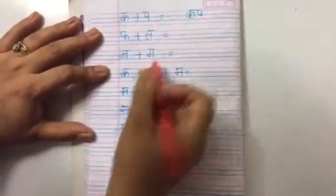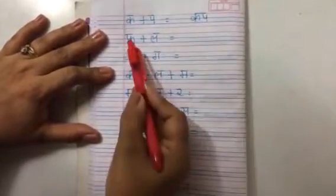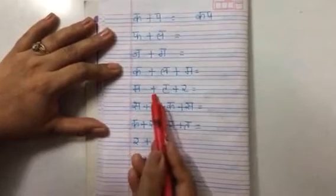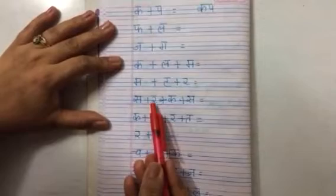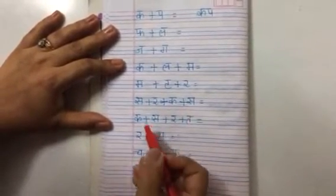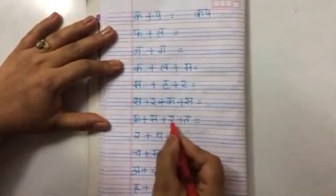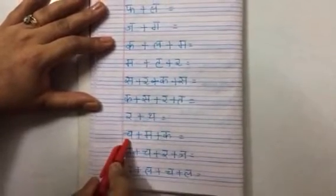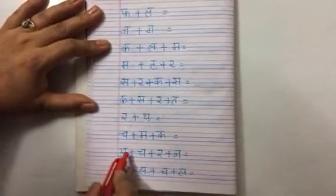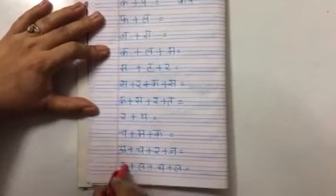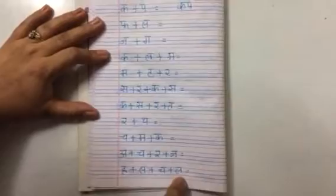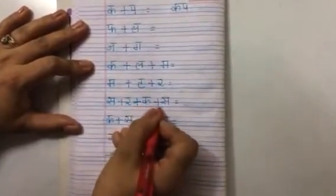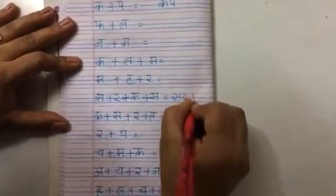K plus P — what is the name? Cup. You have to figure out what the word will be. For plus L. J plus G. K plus L plus Ma. Ma plus T plus R. S plus R plus R plus K plus S. K plus S plus R plus T. A plus Ch plus R plus J. And last is H plus L plus Ch plus L. K plus K plus S.